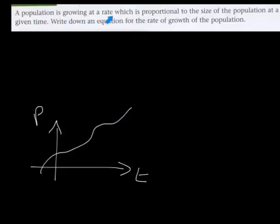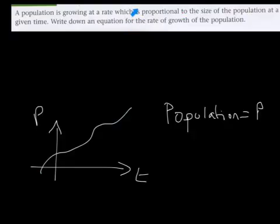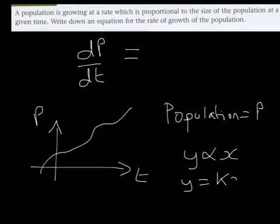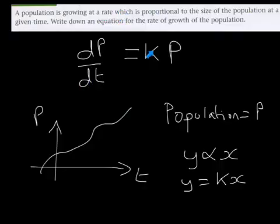It says the population is growing at a rate which is proportional to the size of the population at a given time. If the population equals P, the word 'is' gets translated into the equals symbol. So the rate of growth — dp by dt — measures the gradient of the graph. Now it's proportional: from GCSE, if y is proportional to x then y equals some constant of proportionality multiplied by x. So there's a constant of proportionality multiplied by P, giving dp/dt = kP.